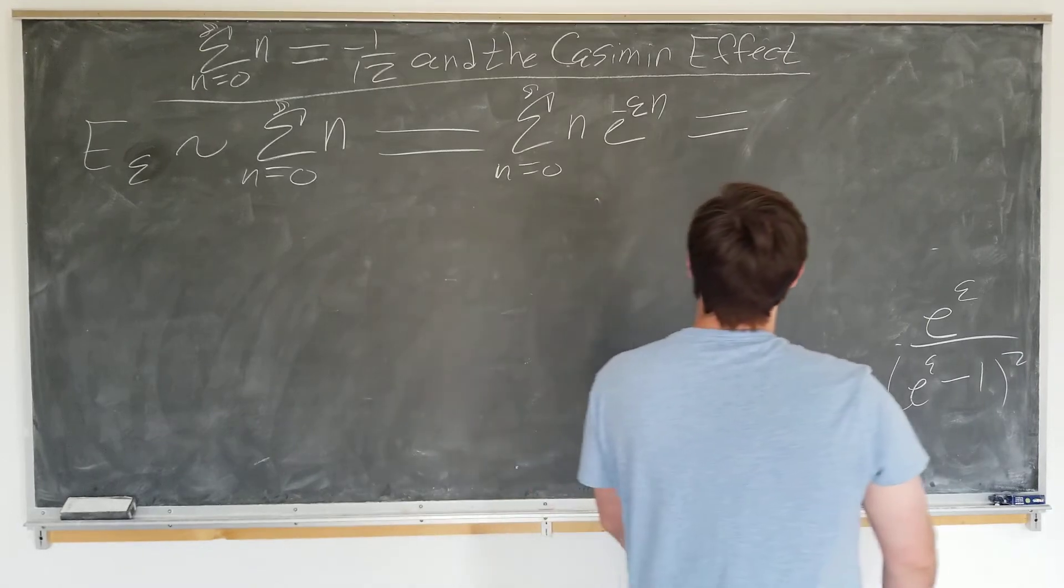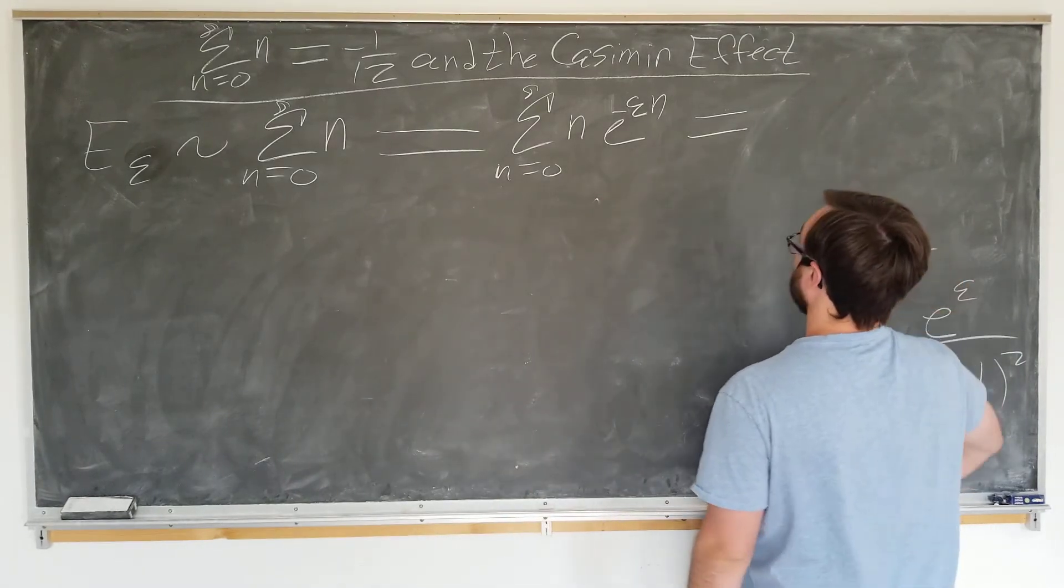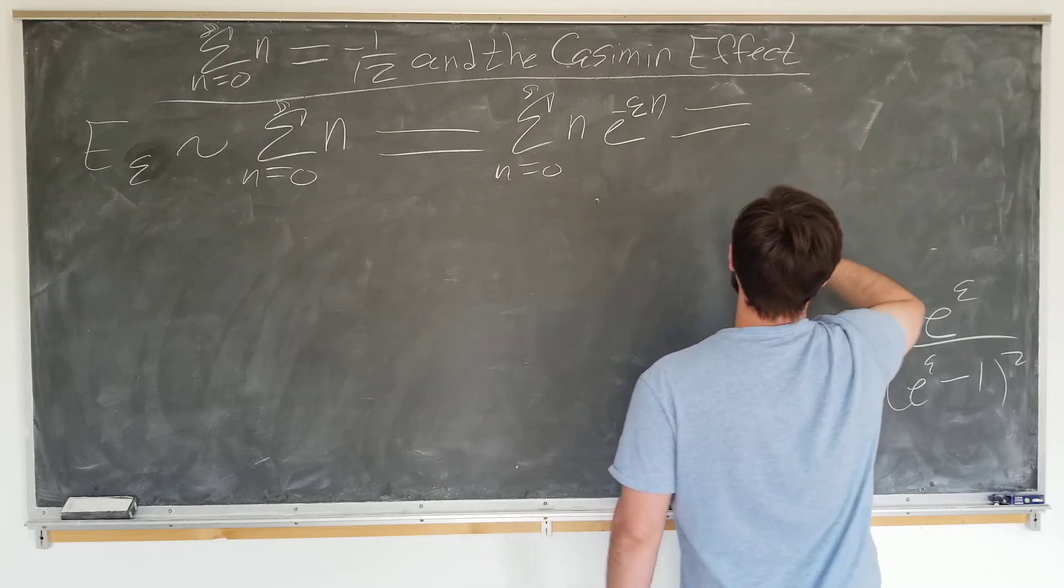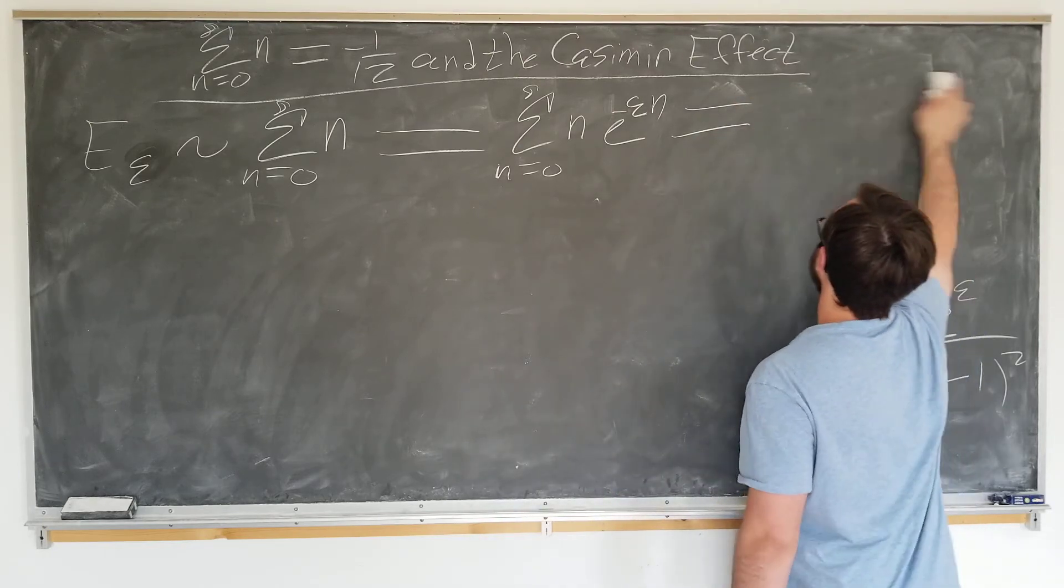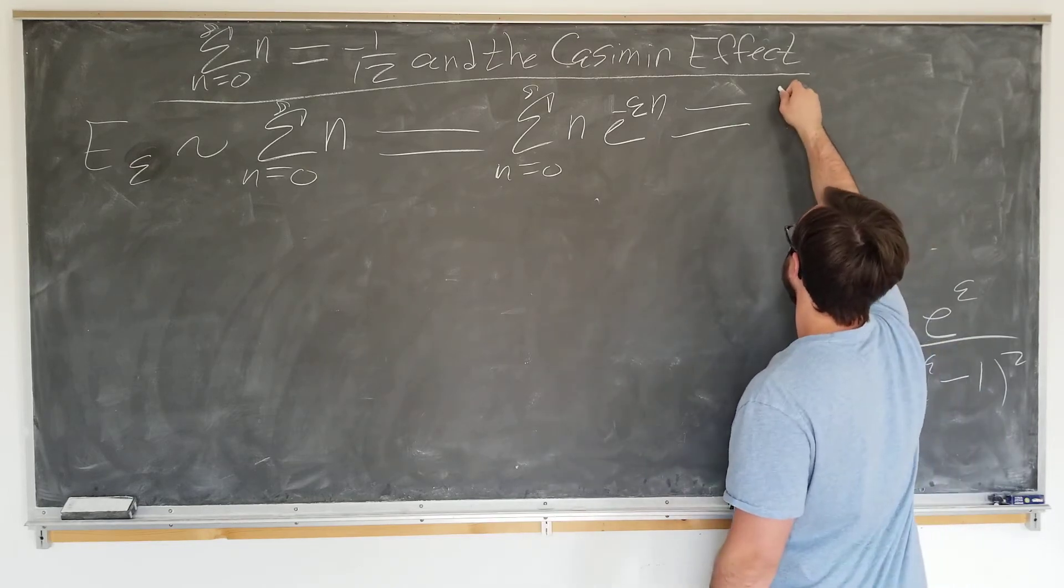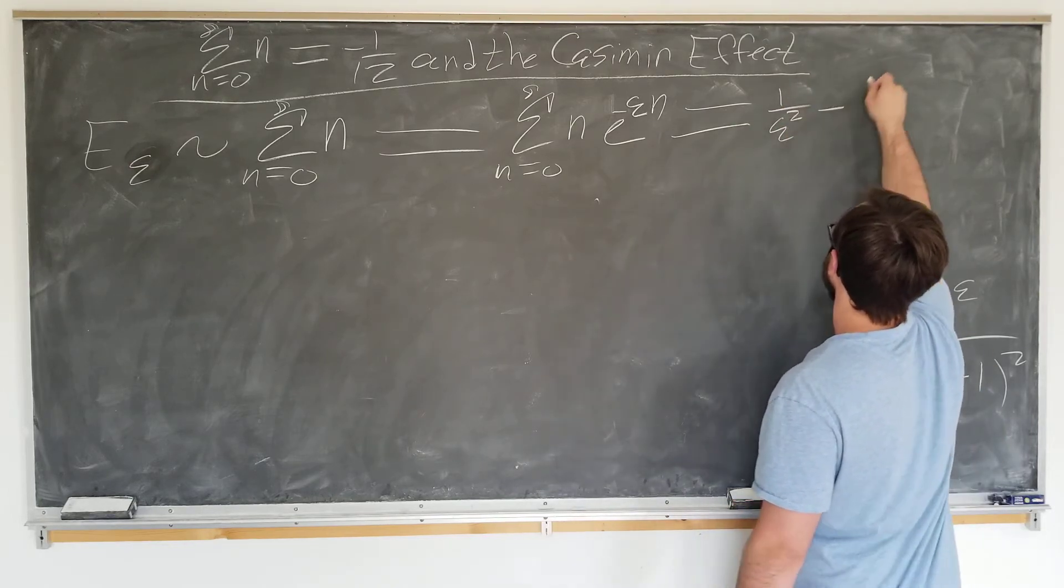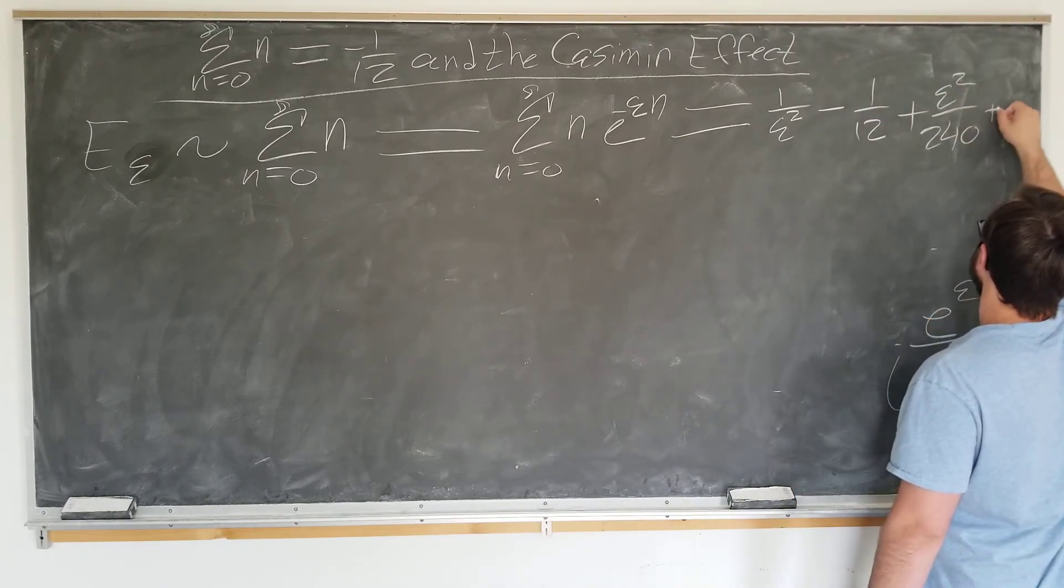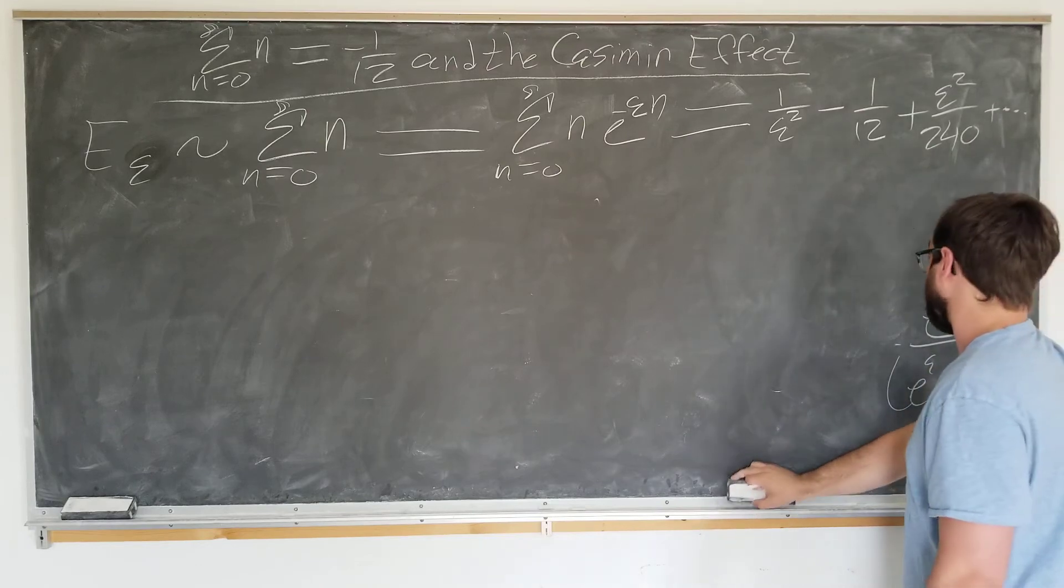So, I'm just going to use Mathematica to tell us that it's going to be... Yeah, actually, equal sign was okay. It's going to be 1 over epsilon squared minus 1/12 plus epsilon squared over 240 plus higher order terms in epsilon.